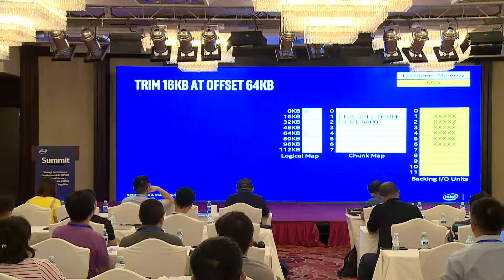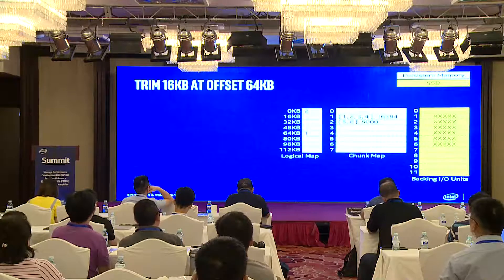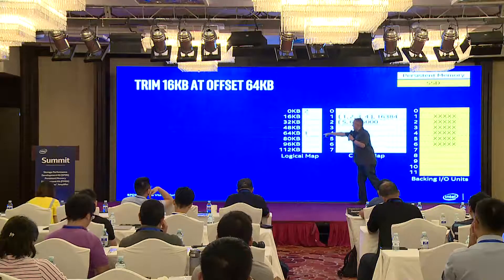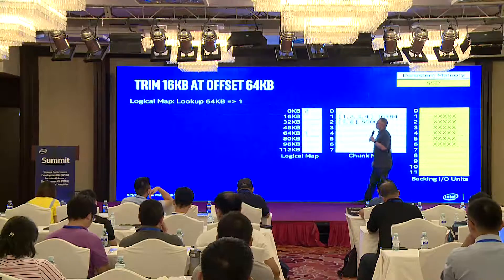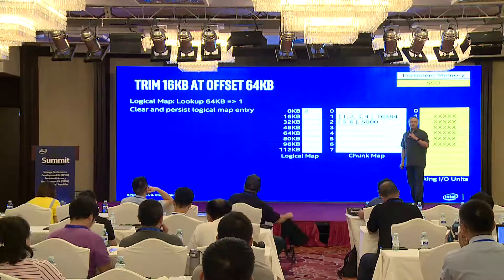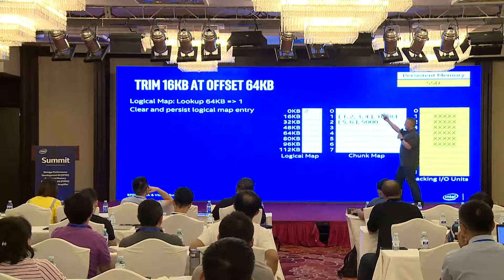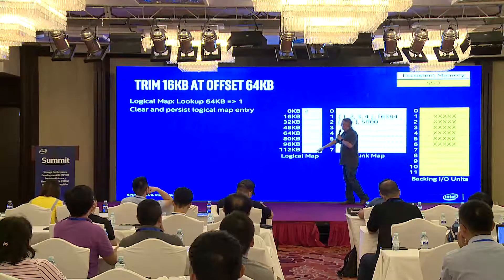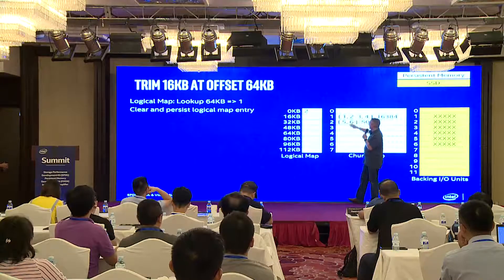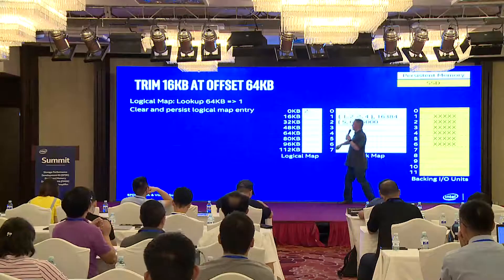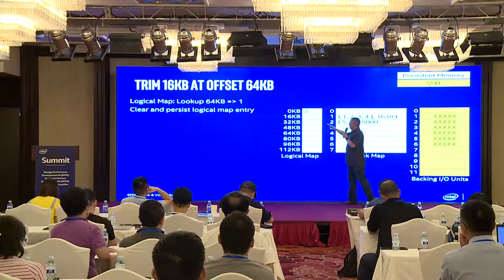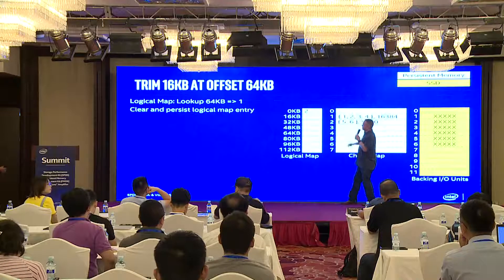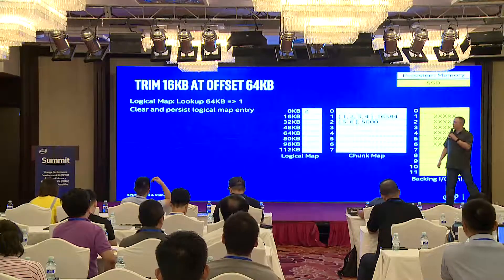Trim: let's say we want to trim the 16K of data stored here. This is really simple — all we have to do is erase the logical map entry. When we come back up, the key part is that when we reload, we read the logical map first, and even if there's data in the chunk map, those entries aren't valid unless something in the logical map points to them. So if we've cleared the logical map entry and the system goes down, nothing will point to that chunk map entry, and it will just be ignored when the logical map is reloaded.